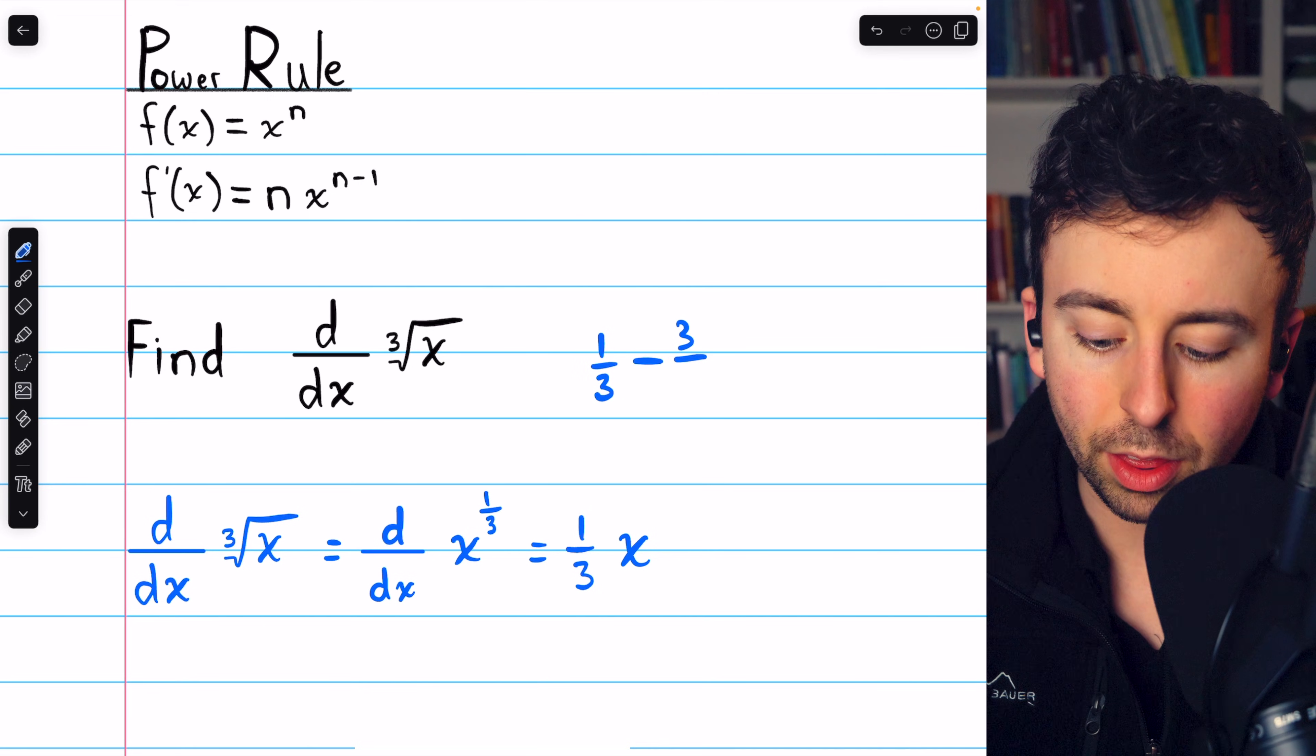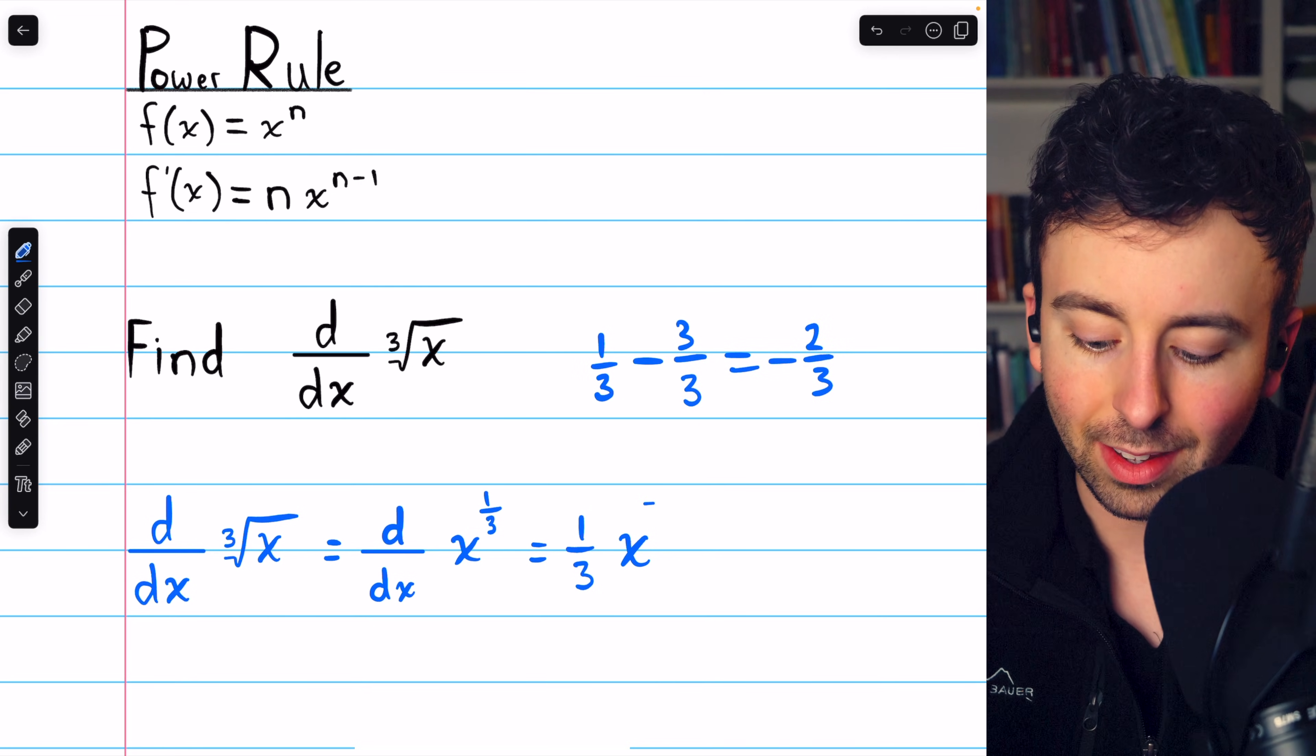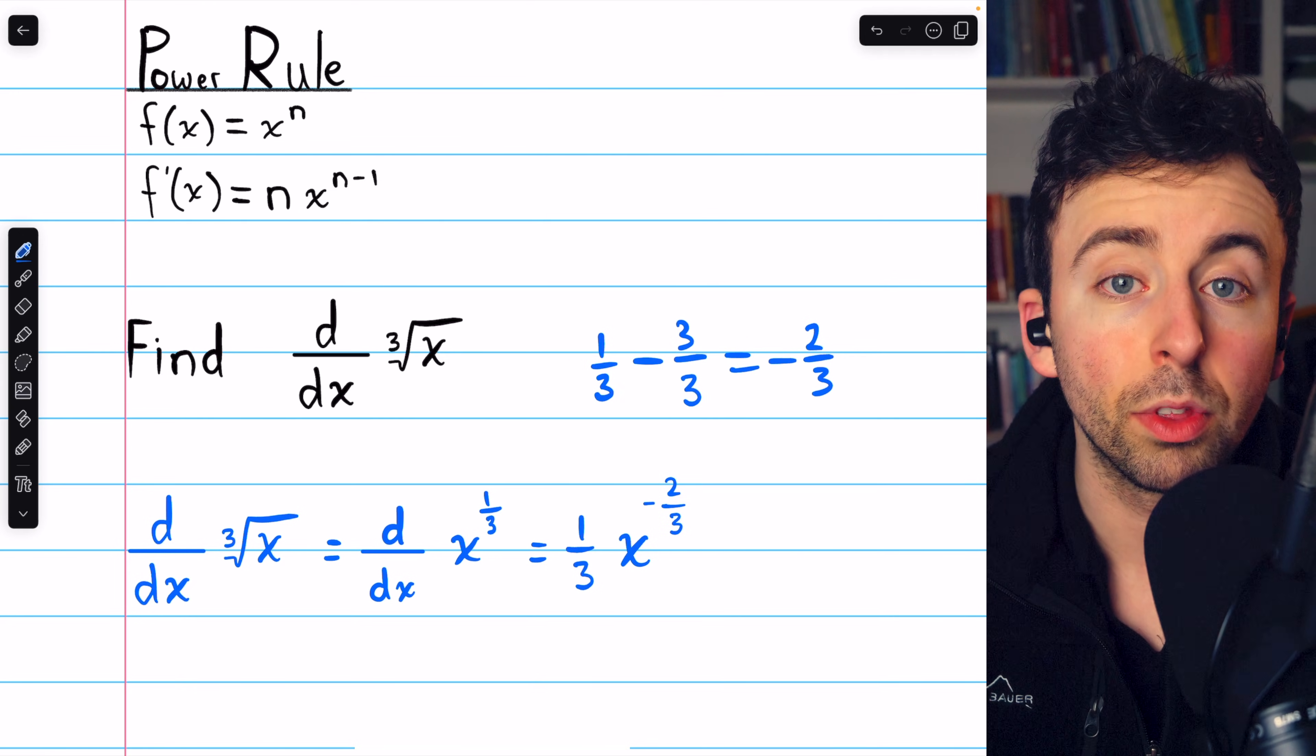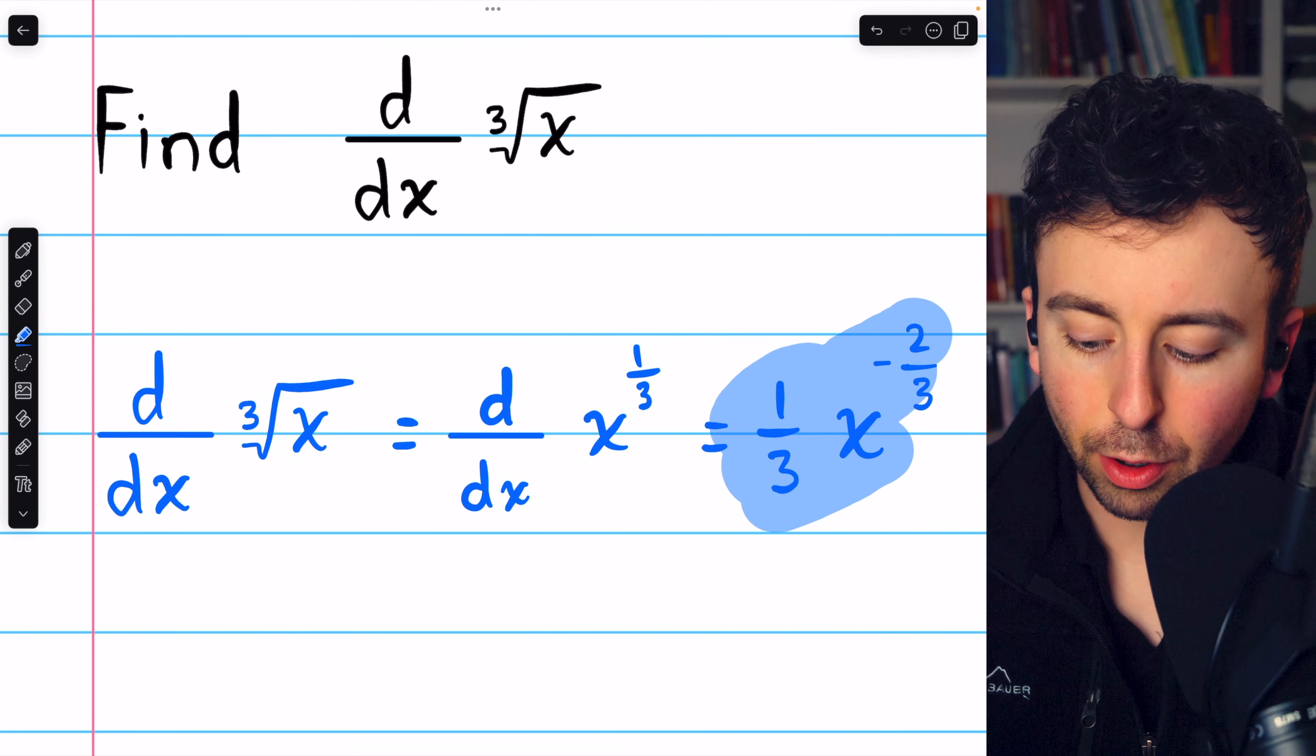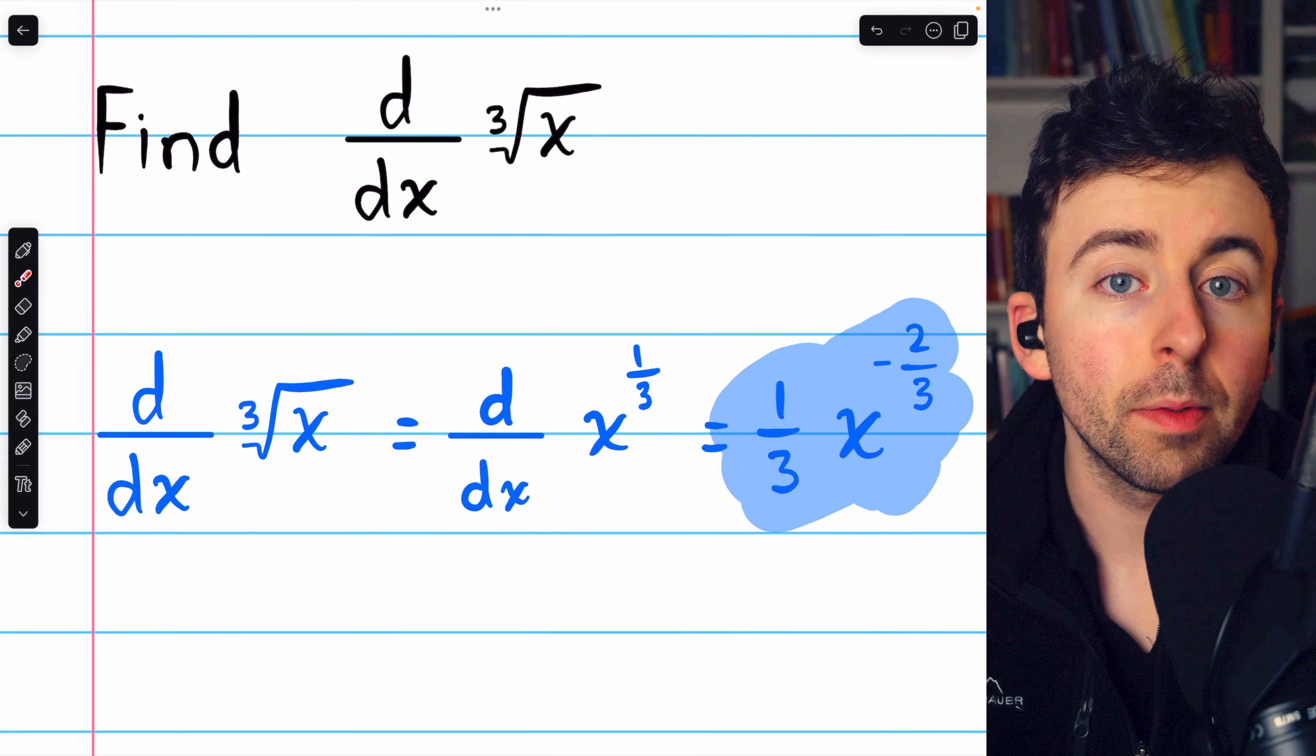which is the same as one-third minus three-thirds, or negative two-thirds. That is our new power, so it's x to the negative two-thirds. And that is our final answer. That's how to take the derivative of the cube root of x using the power rule.